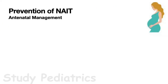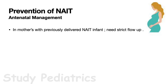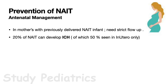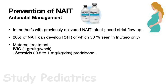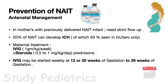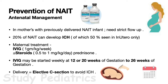For antenatal prevention of NAIT: mothers who previously delivered a NAIT infant need strict follow-up, as 20% of NAIT cases can develop ICH, of which 50% occur in utero. Maternal treatment during pregnancy includes IVIG at 1 gram/kg/week starting at 12–20 weeks up to 26 weeks of gestation, and steroids (prednisolone) at 0.5–1 mg/kg/day. The mode of delivery should be elective C-section to avoid ICH. This aggressive management is tailored based on the outcome of the previously delivered child.